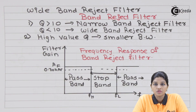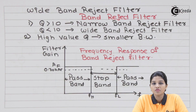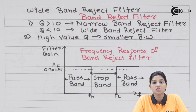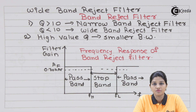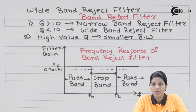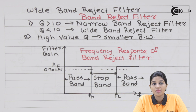A filter is basically a circuit which is used for frequency selection purposes. Based on the frequency response, filters are classified into different types. One of the types is the band reject filter. In case of a band reject filter, as its name indicates, there is only one stop band and two pass bands. The stop band is called the rejection band or attenuation band.